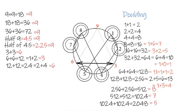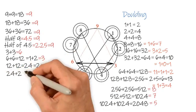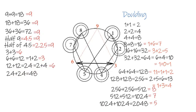12 doubled becomes 24. 2 plus 4 is 6. 24 doubled is 48, and 4 plus 8 is 12. 1 plus 2 is 3. 48 doubled is 96, which comes back to 6, right?